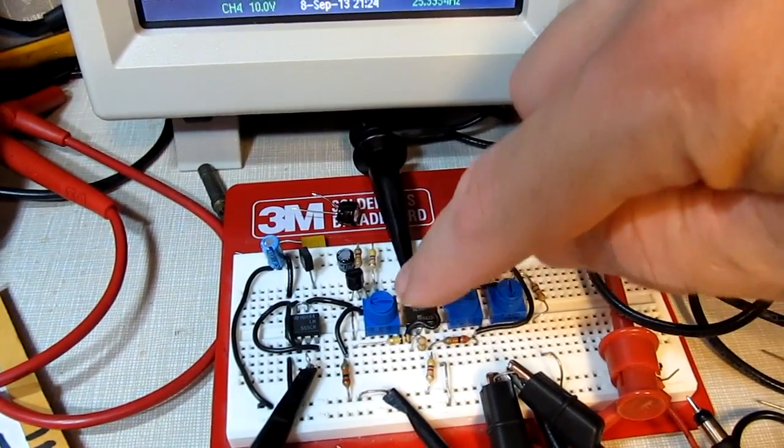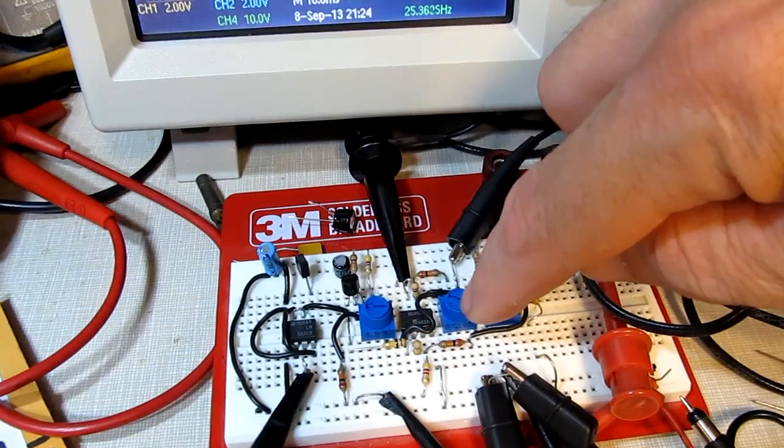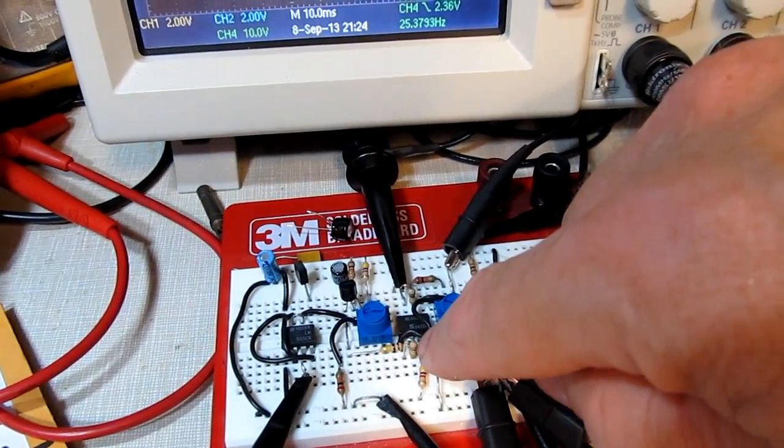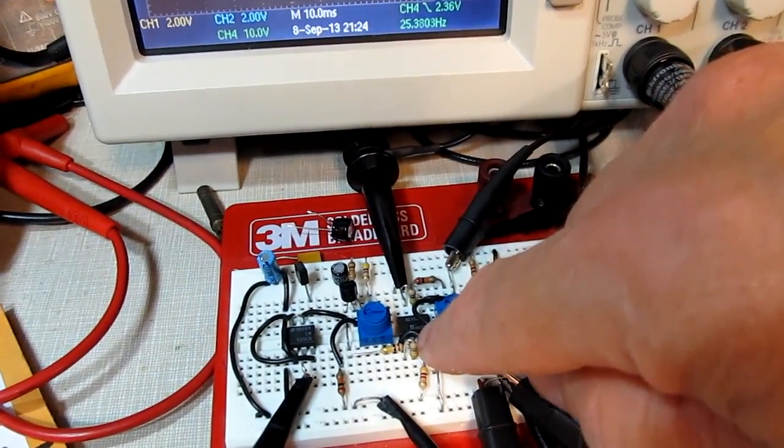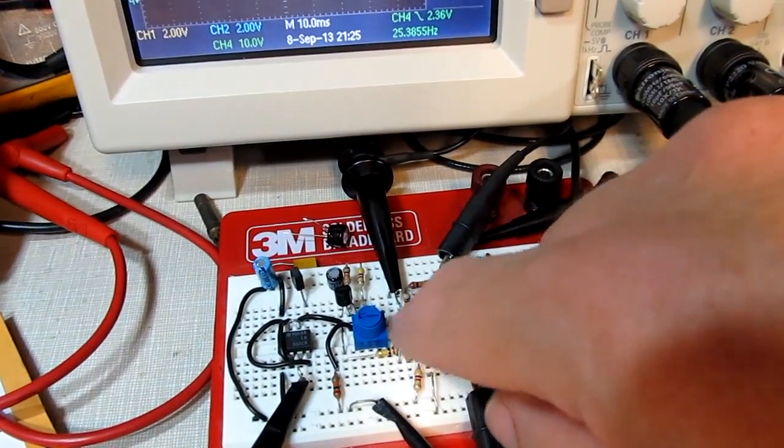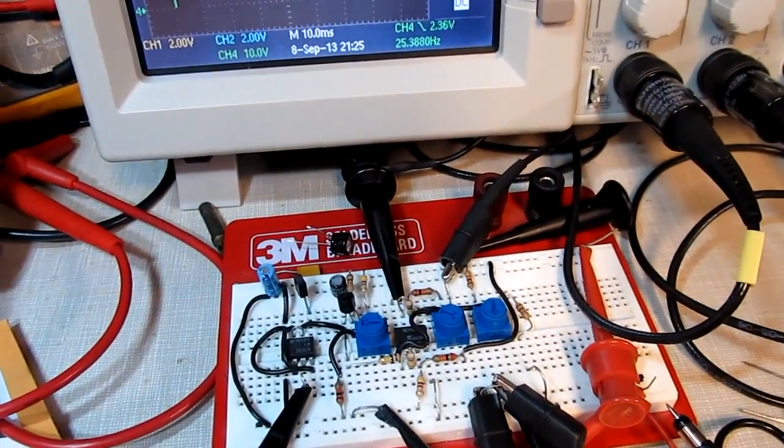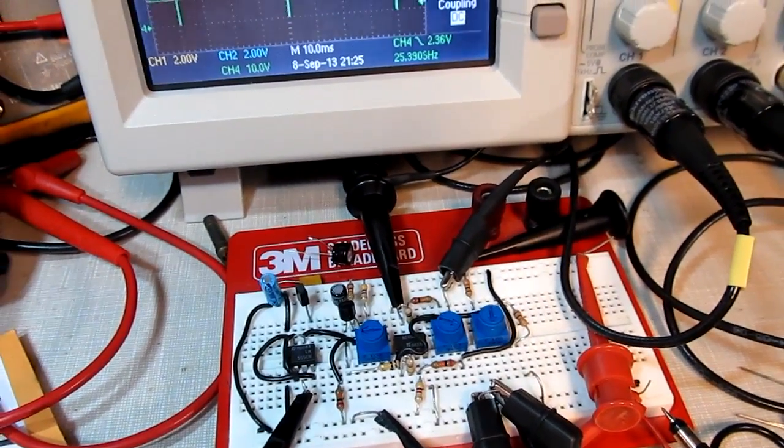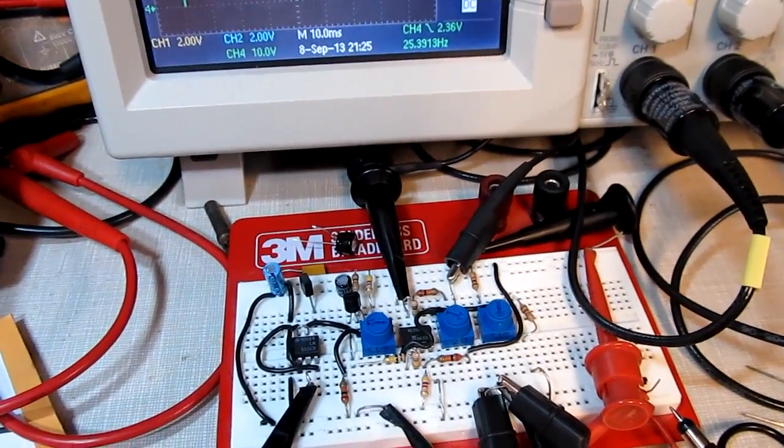That's the adjustment for the sweep speed, adjustment for gain and adjustment for offset. But the op amp, really not that critical. I used an NE4558 since I've got a bucket load of them here. You could also use an LM358. You could use a pair of 741s, just about any general purpose op amp that can withstand a plus or minus nine volt power supply should work just fine.